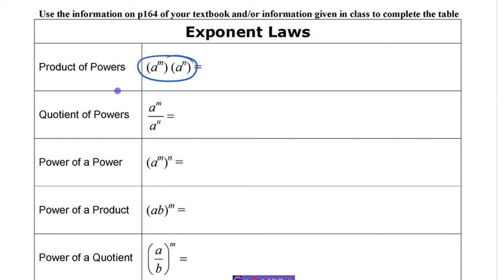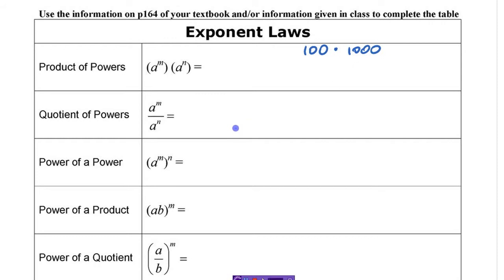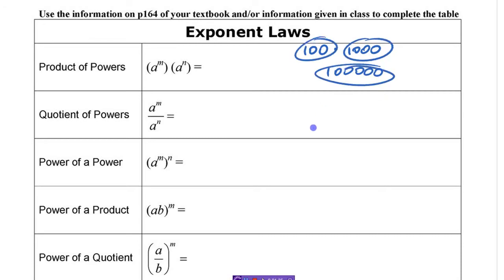You have two powers that you're multiplying together — you actually learned this a long time ago in elementary school. If you multiplied 100 times 1,000, you learned a shortcut for the answer. What was the shortcut? What's 100 times 1,000? 100,000. You probably just learned: if there are two zeros here and three zeros here, there are five zeros there.